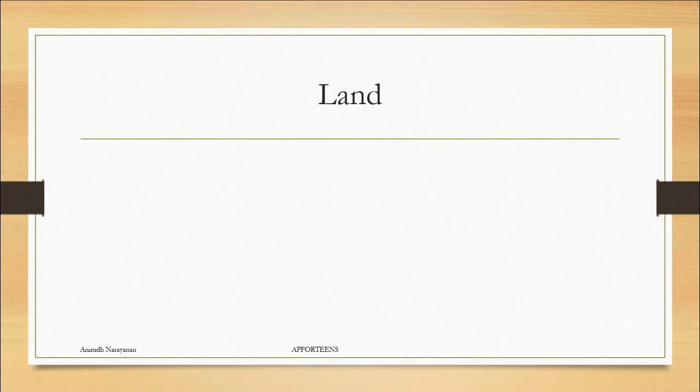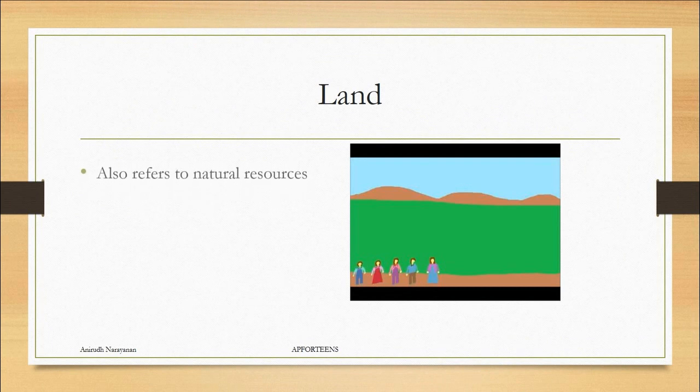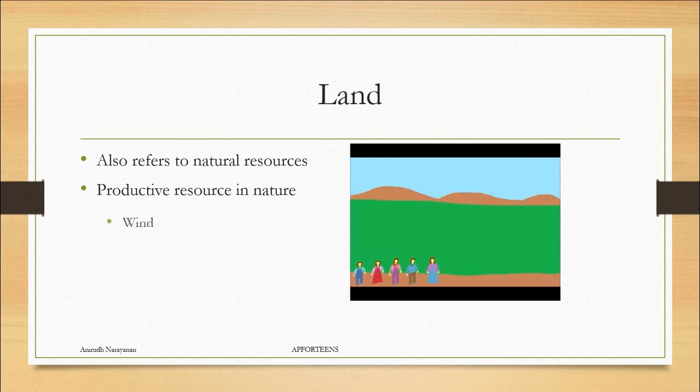Now let's talk about that first one, land. Land also refers to natural resources, the productive resource in nature. Things like wind, water, and plants. These are all useful in producing land.